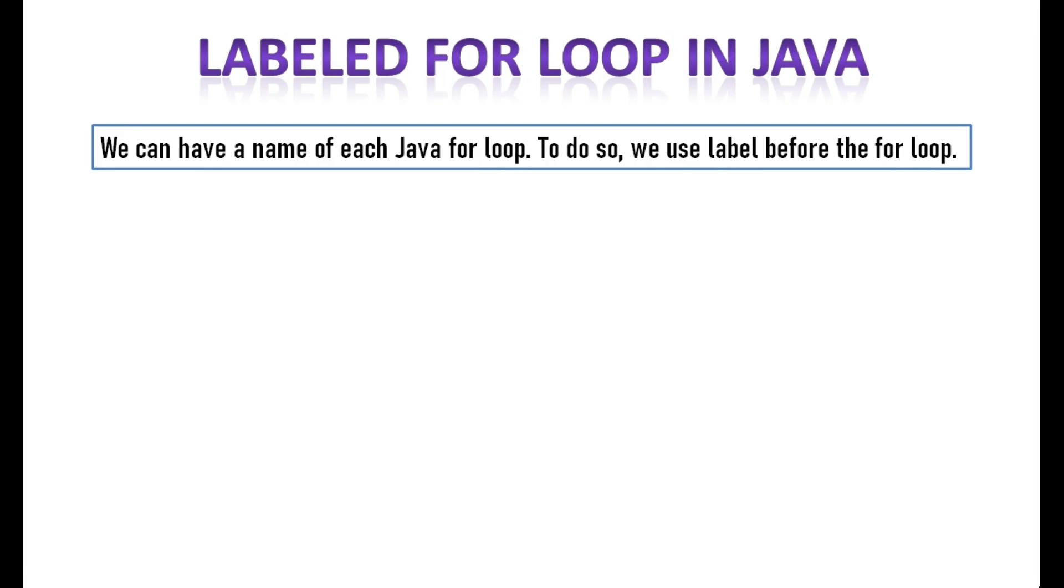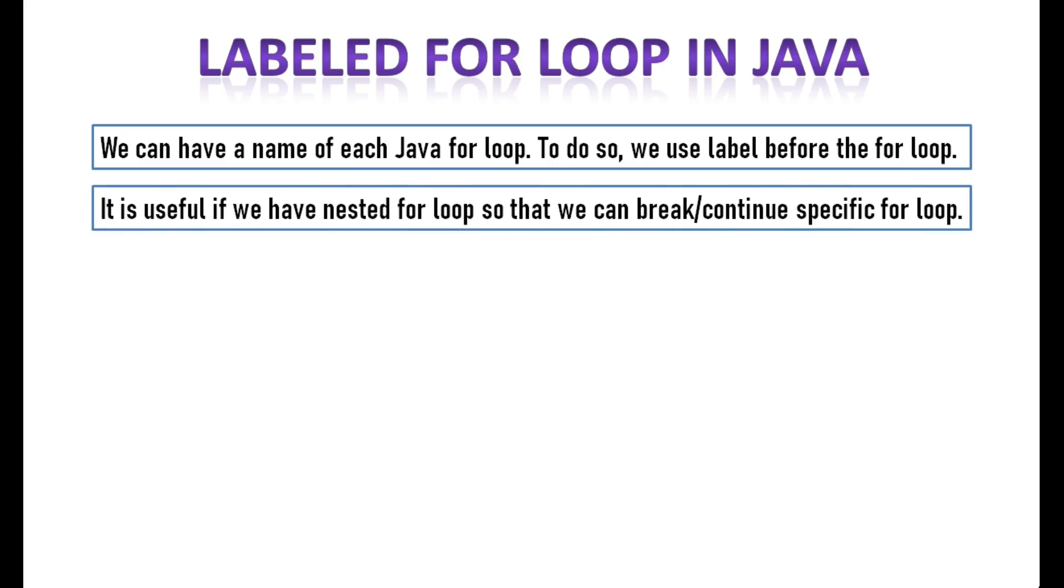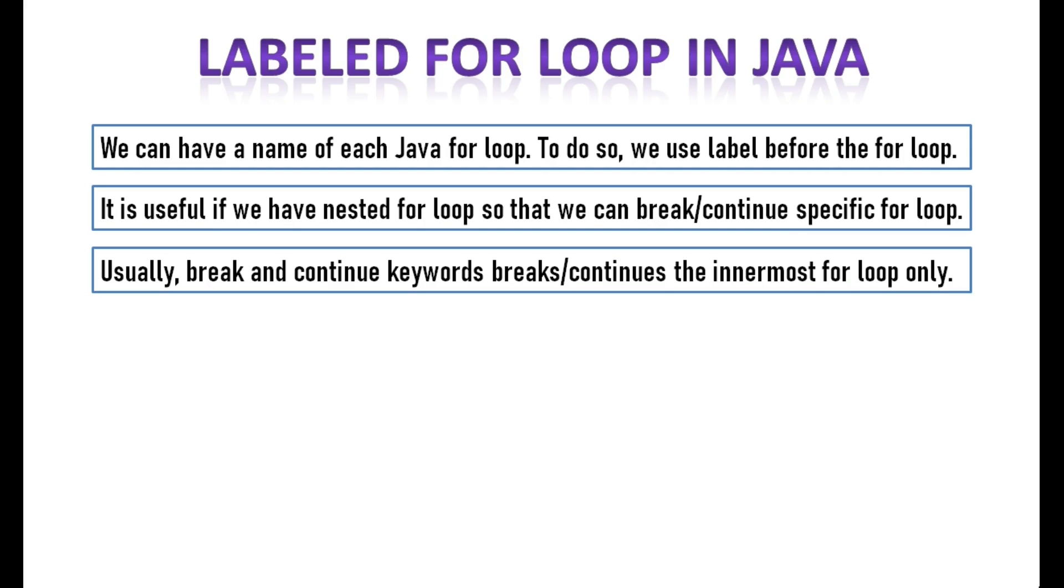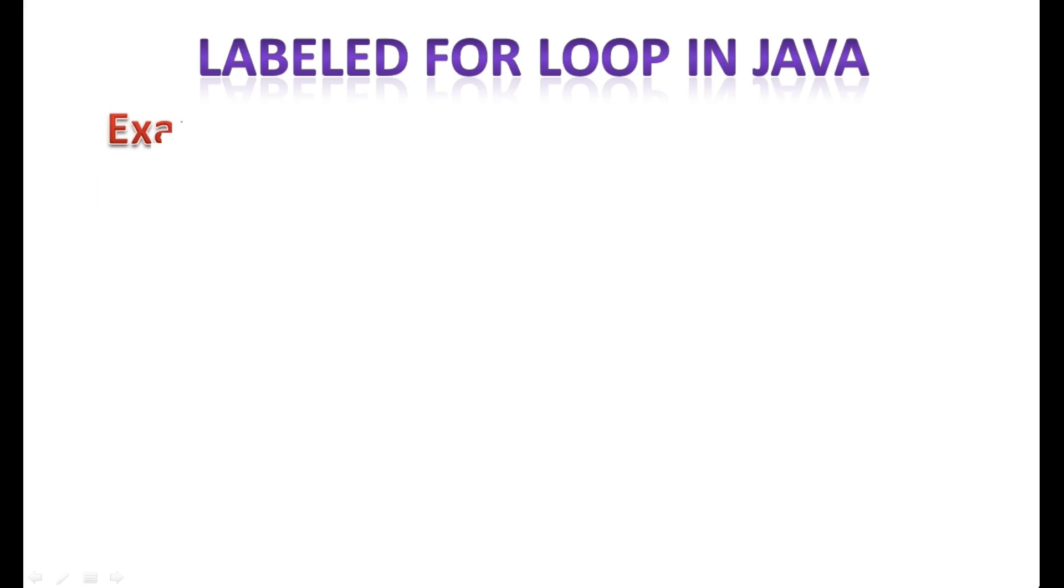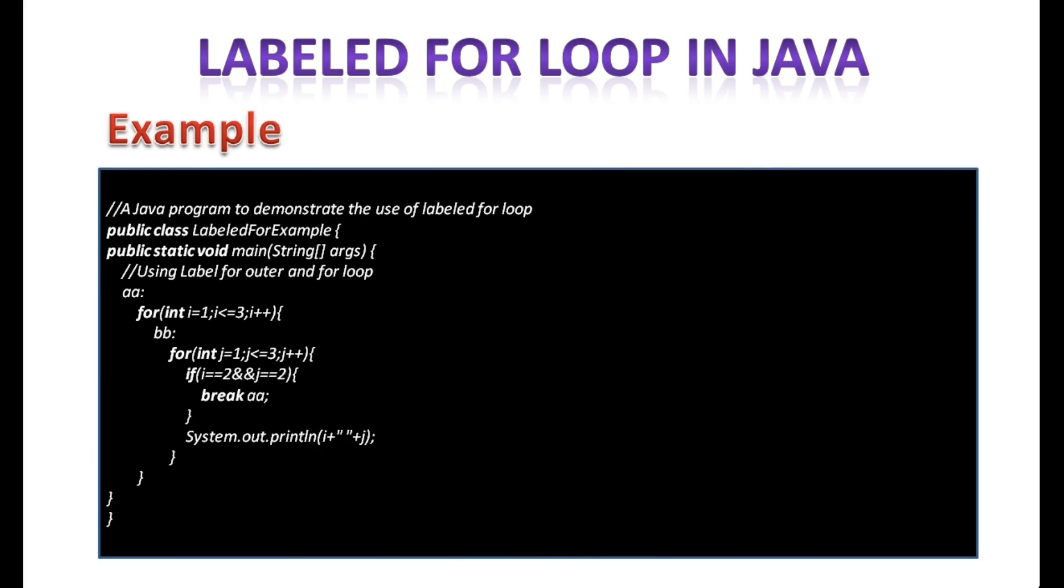Now third is Java labeled for loop. We can have the name of each Java for loop. To do so, we use label before the for loop. It is useful if we have nested for loop so that we can break or continue specific for loop. Usually, break and continue keywords breaks or continues the innermost for loop only. This is the syntax of labeled for loop. Look at this example of labeled for loop.